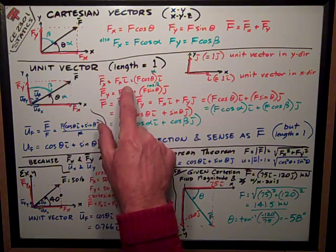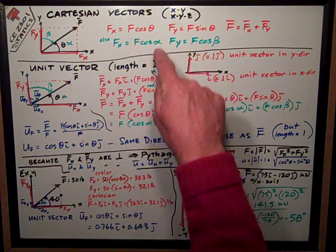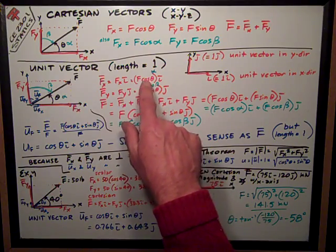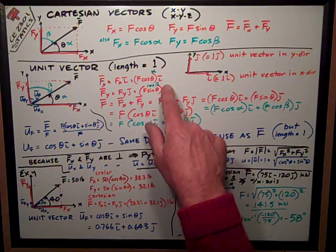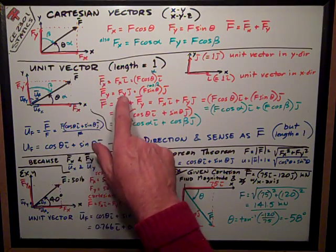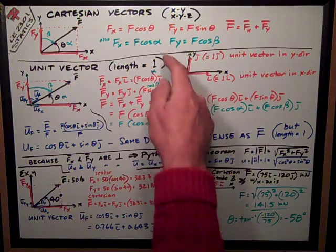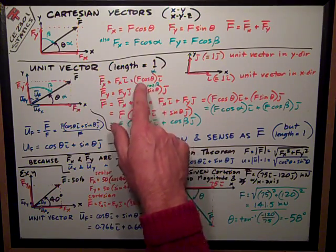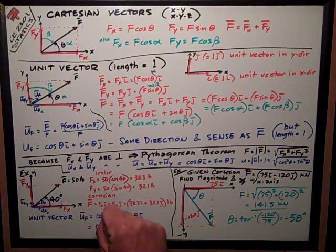Using this term up here, where fx, the scalar number, is f cosine theta, I can substitute that in here for fx, and I can say that fx, the vector, is equal to f cosine theta times i, the unit vector in the x direction. Same thing with the fy vector, you can express it in those similar terms. Looking ahead to when alpha and beta are the angles to the x and y axis, I can write this as f cosine alpha, and this is f cosine beta times the j.